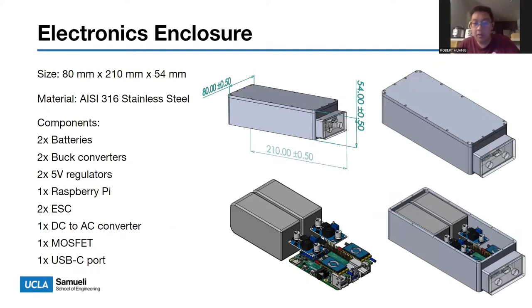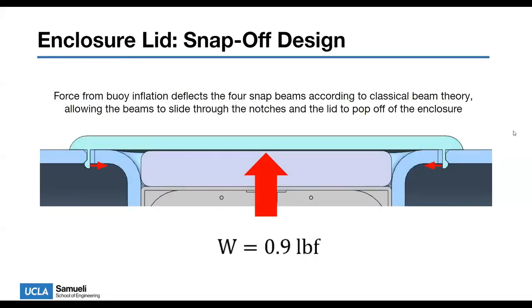Moving onto the electronics enclosure, this is where all of the electronics will be housed. Its dimensions are 80 millimeters by 210 millimeters by 54 millimeters. The entire body plus lid will be made from 316 stainless steel. Components include 2 batteries, 2 buck converters, 2 five volt regulators, 1 raspberry pi, 2 electronic speed controllers, 1 DC to AC converter, 1 MOSFET, and 1 USB-C port to charge the batteries.